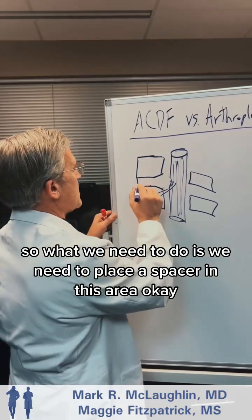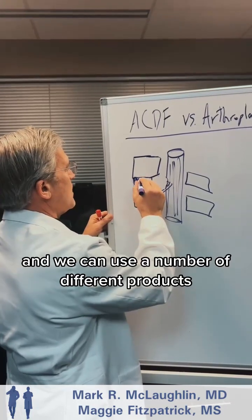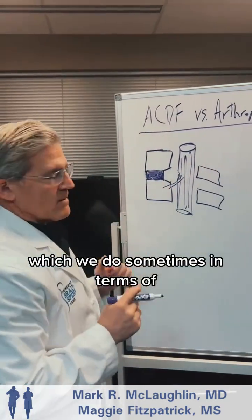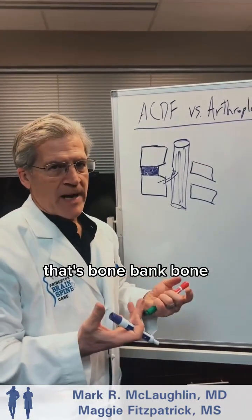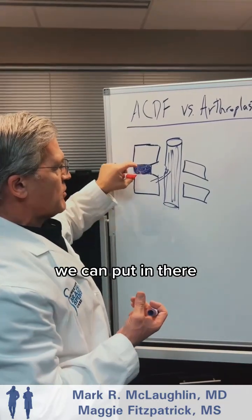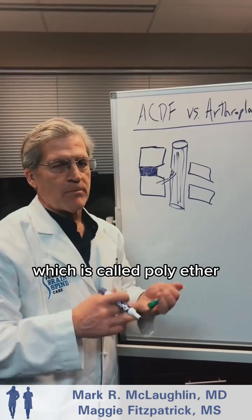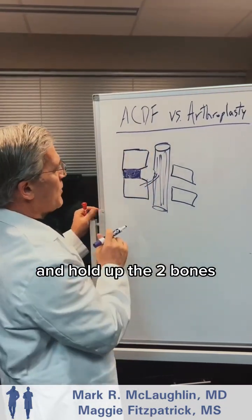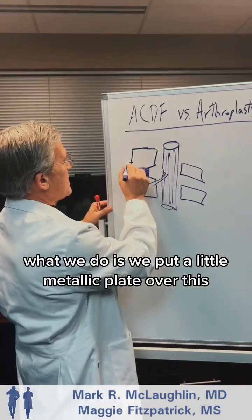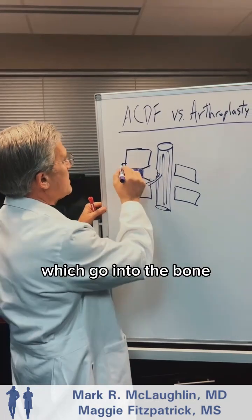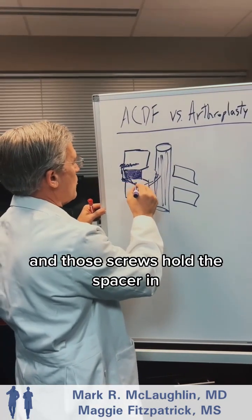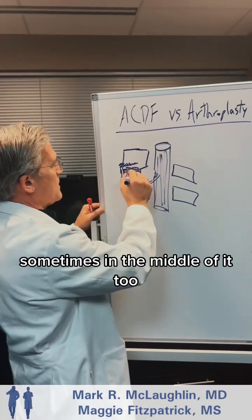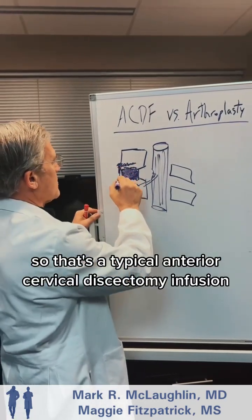We need to place a spacer in this area. We can use a number of different products: autologous bone harvested from the iliac crest, which we use sometimes in cases of infection; allograft bone, which is bone bank bone with structural rigidity; a plastic spacer called polyether ether ketone, or PEEK; or a metallic titanium spacer. Any of these spacers hold up the two bones. To solidify that, we put a metallic plate over this with screws that go into the bone, holding the spacer in. The patient's bone will grow into the surfaces of the spacer and sometimes through the middle. That's a typical anterior cervical discectomy and fusion.